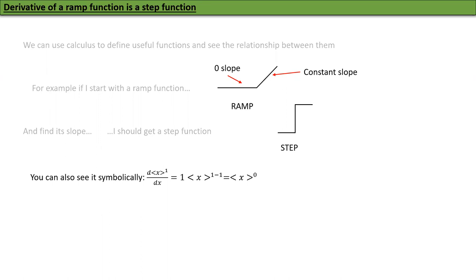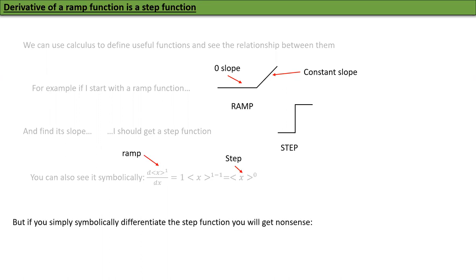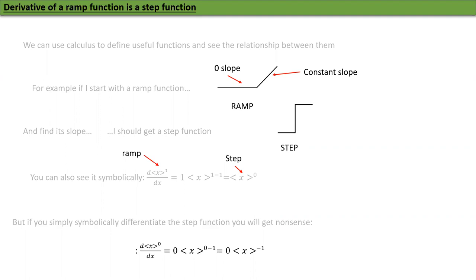Can I do that again? If you symbolically differentiate the step function you will get nonsense: d/dx of ⟨x⟩^0 equals zero times ⟨x⟩^(0−1), giving ⟨x⟩^(−1), which is not correct. Zero times ⟨x⟩^(−1) is close in terms of symbol but it's not correct. So what's going on? For that, we have to look at what the derivative actually means.